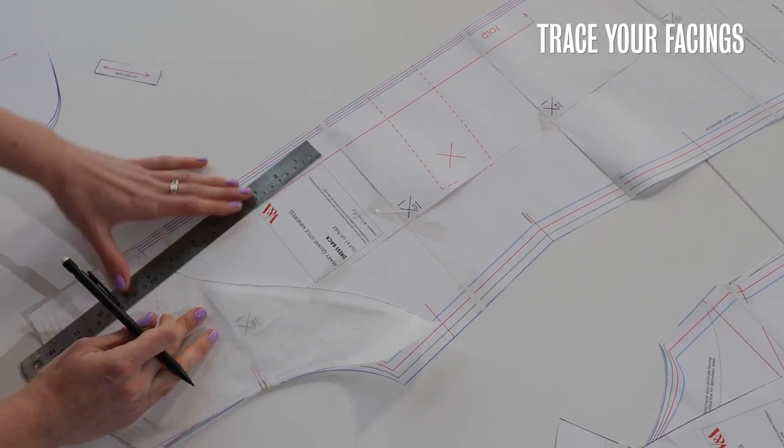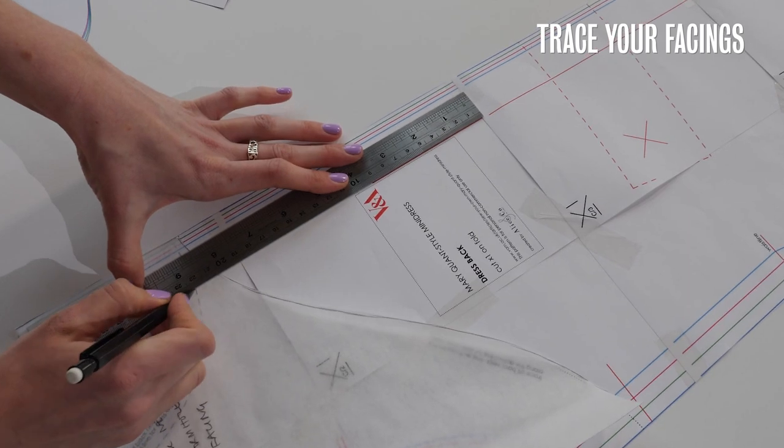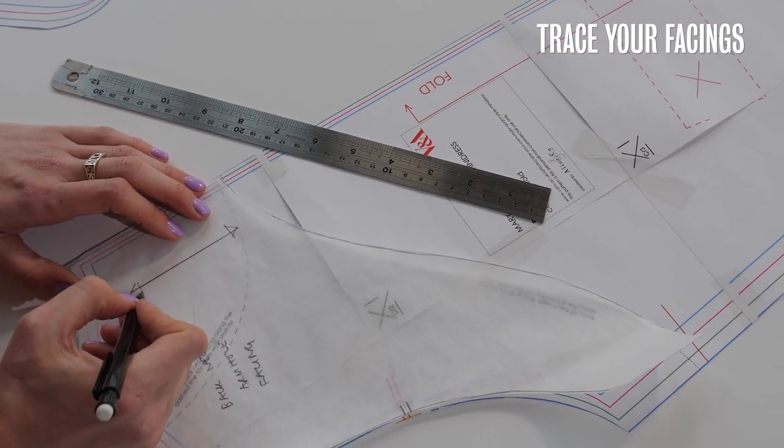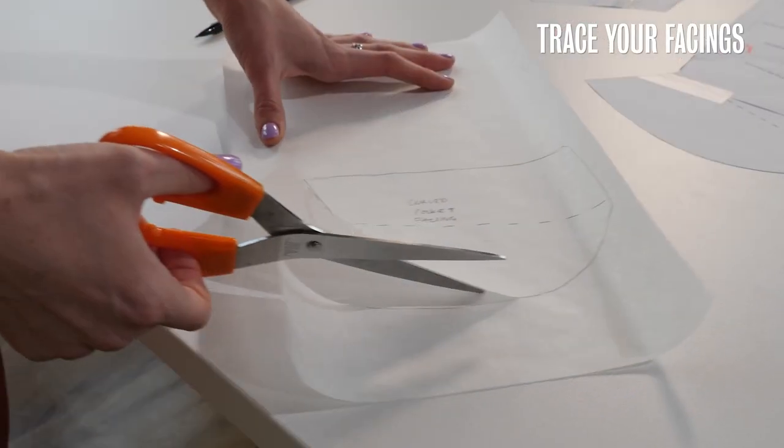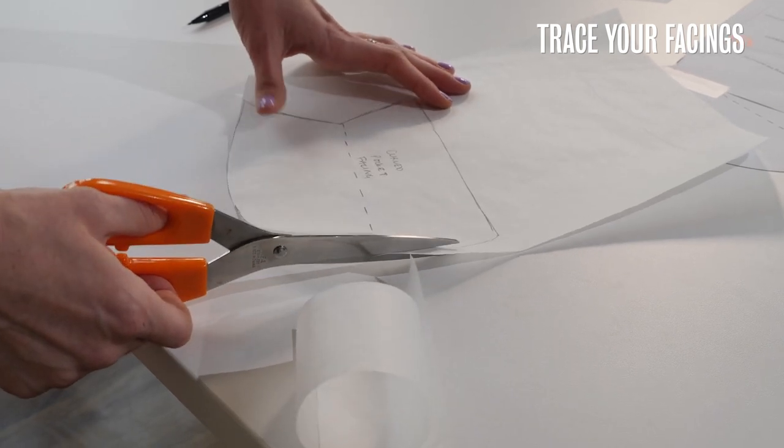So I can do that by just placing the facing piece over the pattern and drawing it off to the main grain line. So next I just need to cut out my facing pieces and then I'll be ready to cut out my fabric.